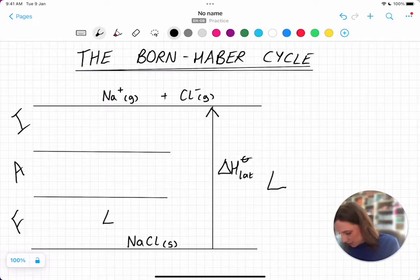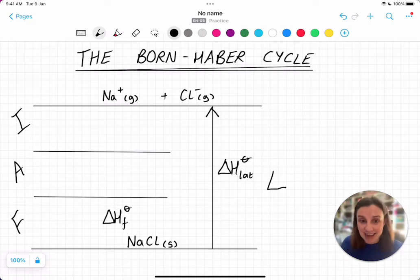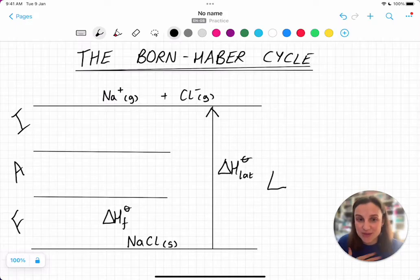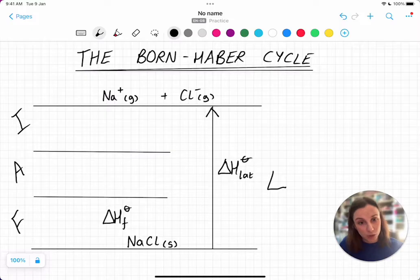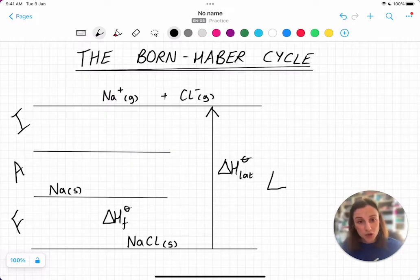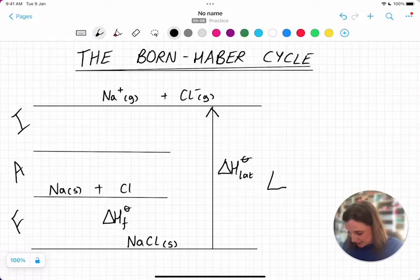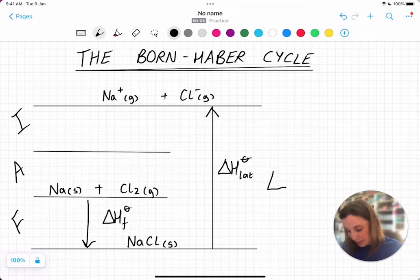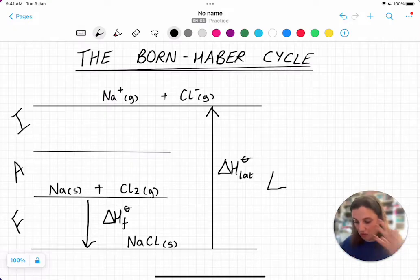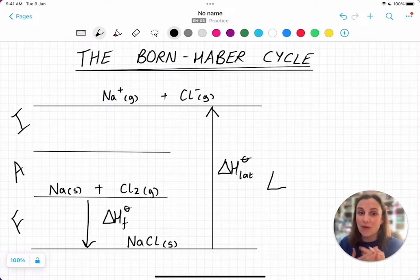The F stands for delta H formation. Formation is when you take the elements in their standard states under standard conditions and then you form one mole of the compound. In this case, I'm trying to form sodium chloride. So sodium in its standard state exists as sodium solid. The chlorine exists as Cl2 in its gaseous standard state. So the delta H F is going from those elemental forms to the sodium chloride.